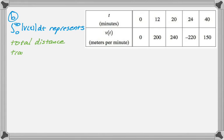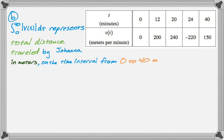So, I like to write that down immediately, and then I throw in the context. So, it's total distance traveled by Johanna, in meters, those are your units, and on the time interval T equals 0 to T equals 40 minutes. So, basically during her jog. Okay.